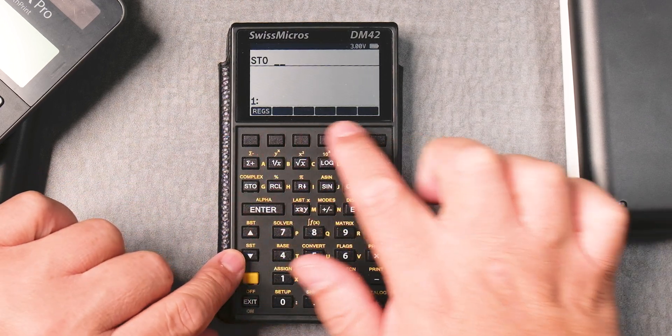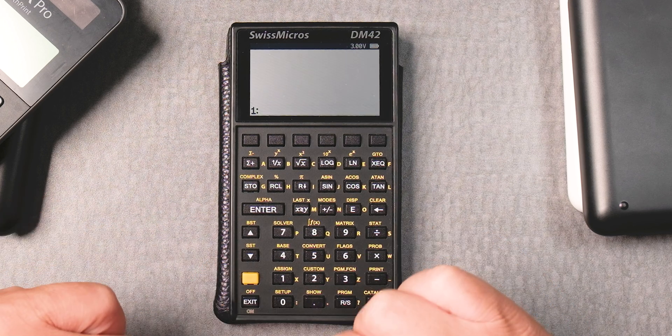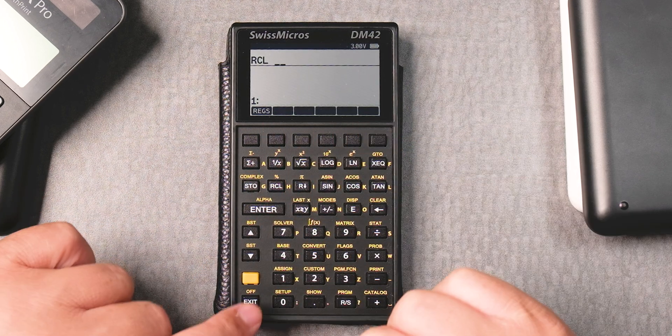For example, if I click on store, I don't see anything except for that REGS, exit and recall. There isn't anything stored there.